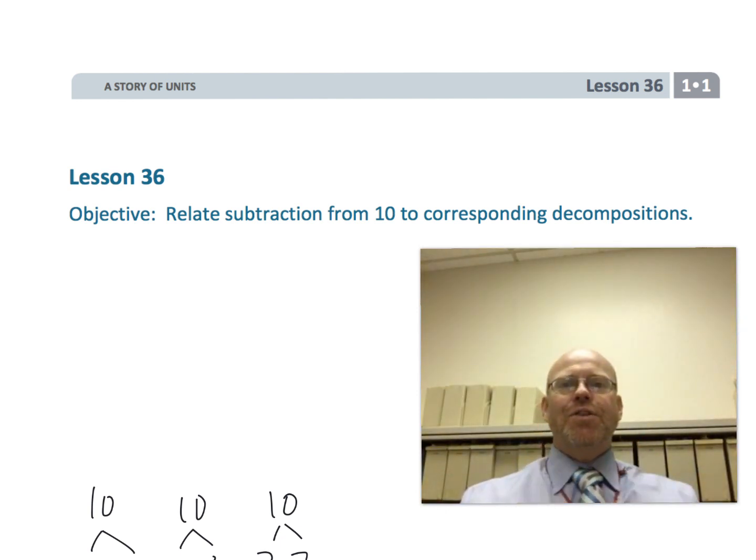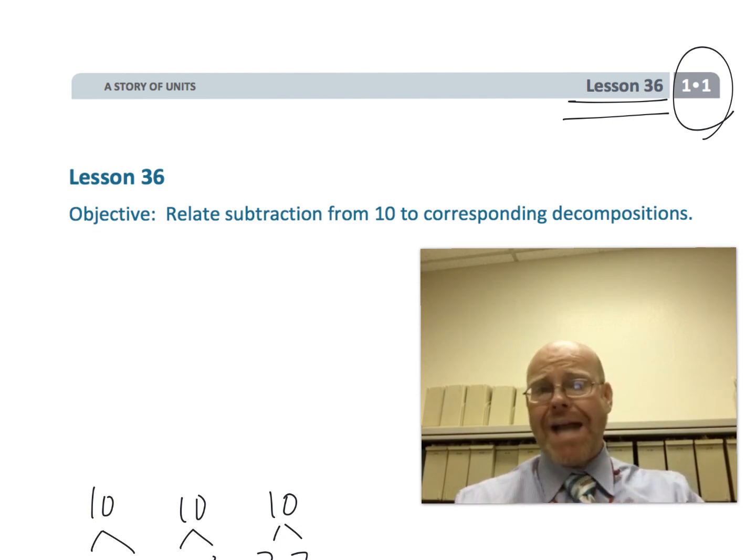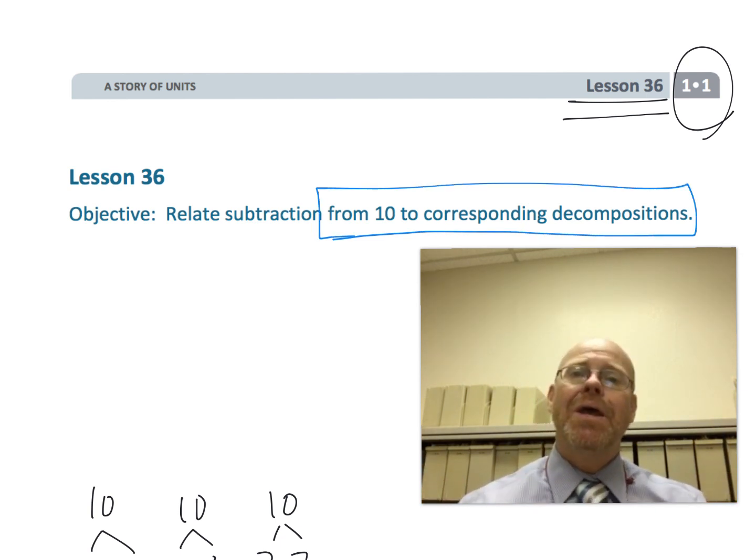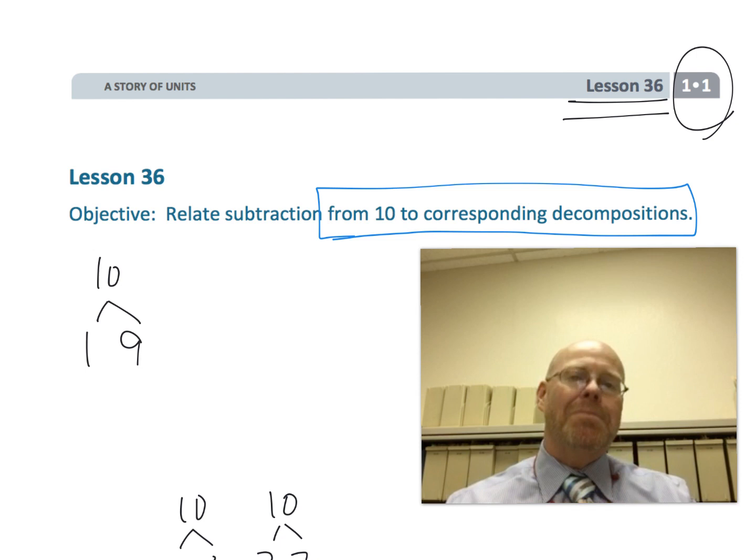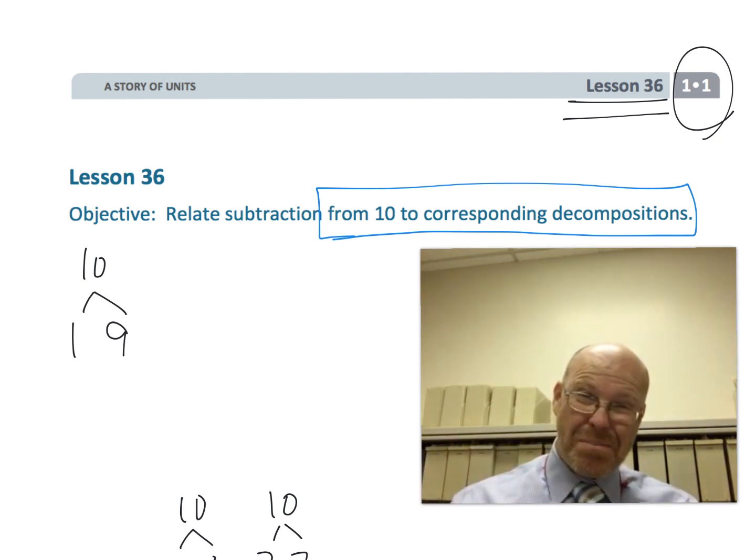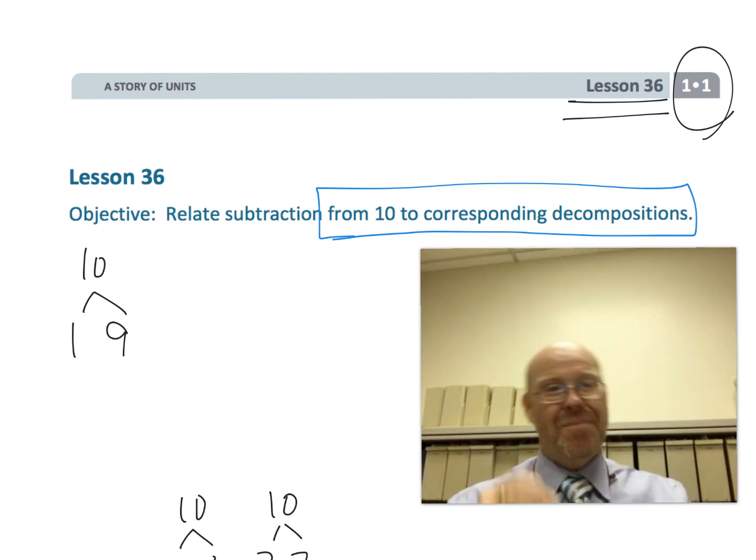This is first grade module 1 lesson 36. In this lesson we're going to be relating subtraction from 10 to all the corresponding decompositions, which is a fancy way of saying we're going to be finding all of the number bonds that relate to the number 10 as our whole. For example, 1 and 9, 2 and 8, 3 and 7, you get the idea.